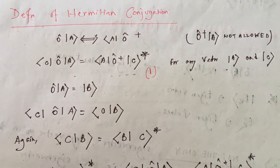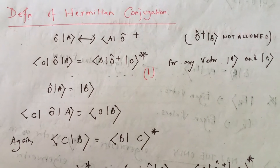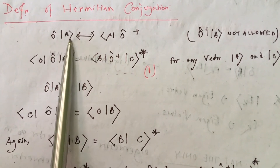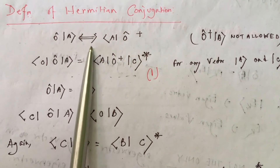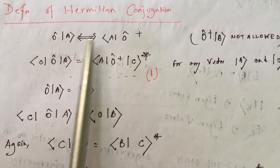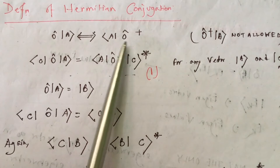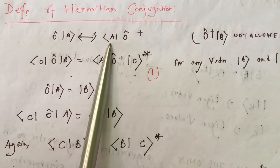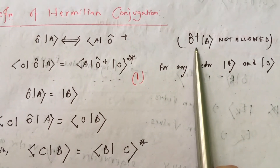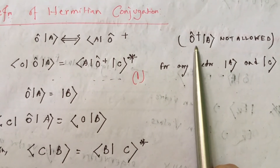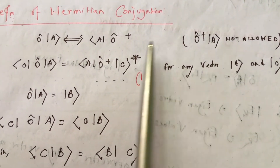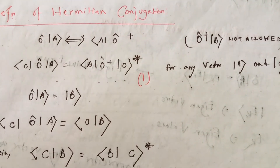Let's discuss what is Hermitian conjugation of an operator. I have an operator O which is operating on a ket vector A from the left-hand side. After dual conjugation, the Hermitian conjugate of O, written as O dagger, operates on bra vector A from the right-hand side. I cannot allow O dagger to act from the left-hand side on a ket vector because that would be illegal. This is the legal operation of the Hermitian conjugate operator.